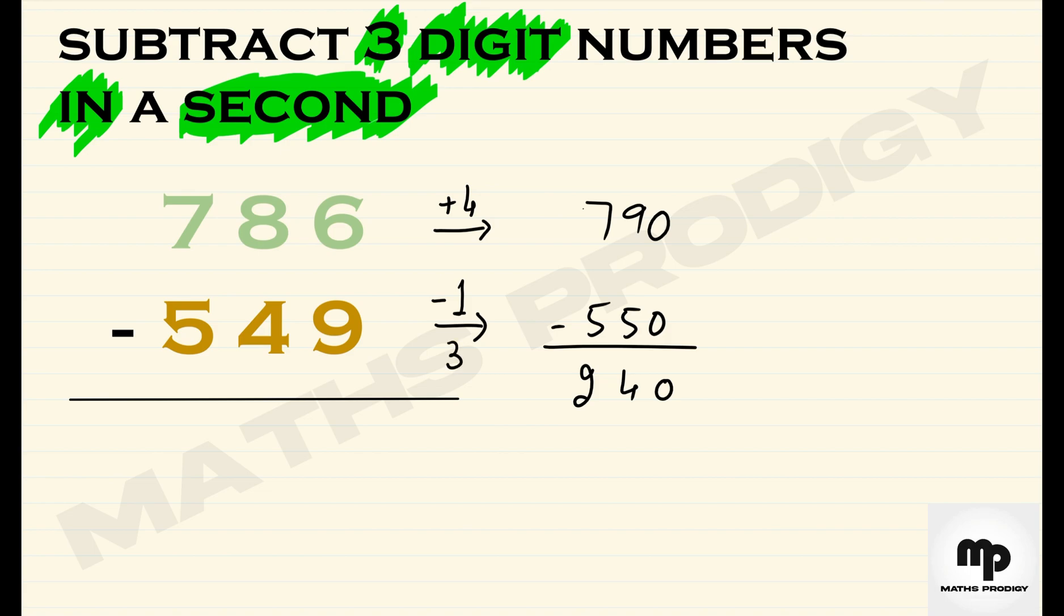4 minus 1 is 3, and from the final you will subtract 3. The final answer is 237.